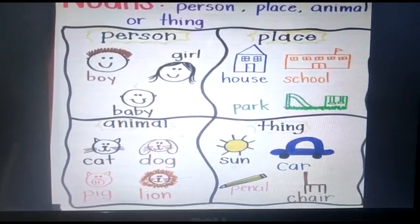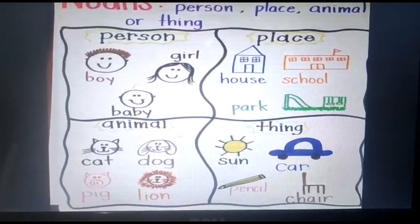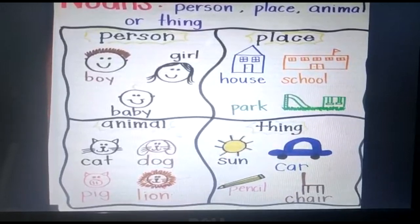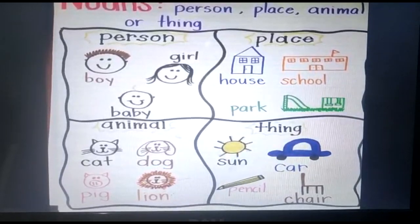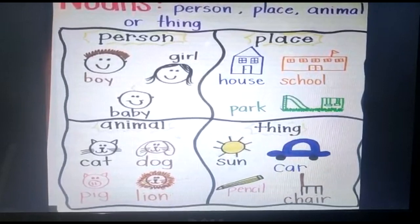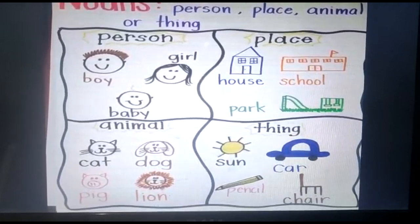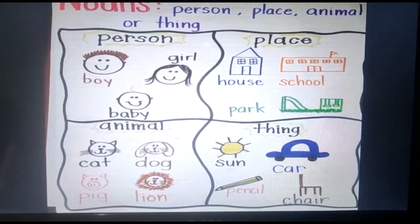Animals like cat, dog, pig, lion. Things like sun, car, pencil, chair.